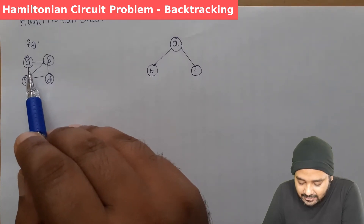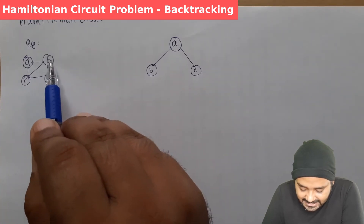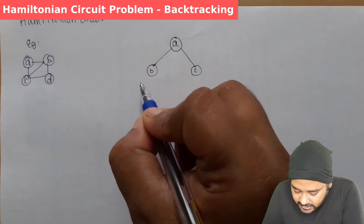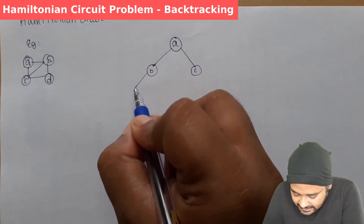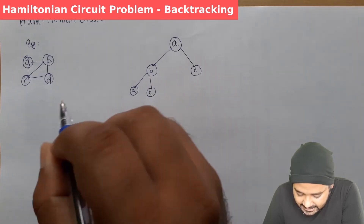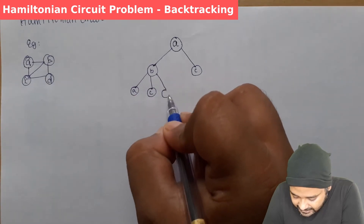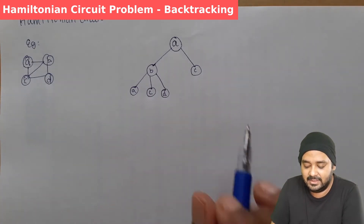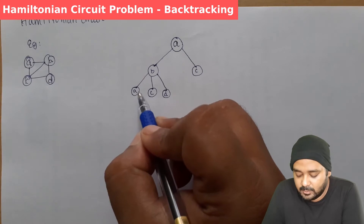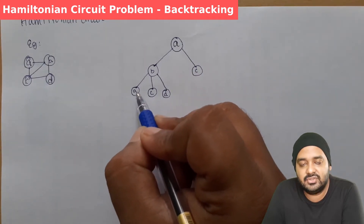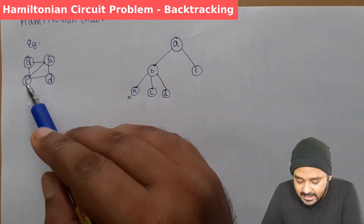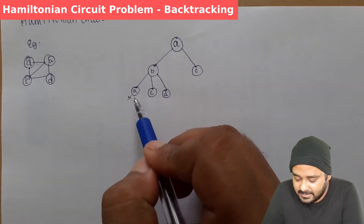Next, we take node B and look at its opportunities. From B, the possibilities are A, C, and D. We mark A, C, and D as children. However, A is already visited and should be the last node visited, so since we haven't visited C and D yet, we cannot travel that path. So we ignore A and continue exploring C and D from B.